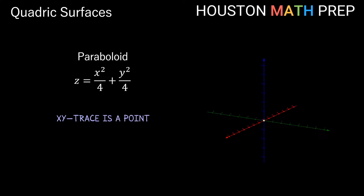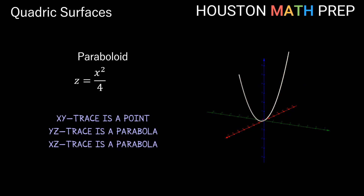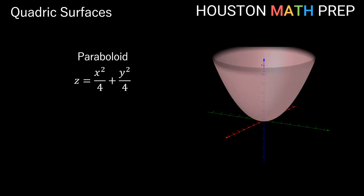Setting z = 0 for the xy trace gives two quadratic terms adding to zero, which can only happen when x and y are both zero — so the trace is just the origin, similar to the cone. Setting x = 0 for the yz trace gives a parabola in the yz plane, and setting y = 0 for the xz trace gives another parabola. Looking at all traces together, we can see the structure of this parabola-based surface — a circular paraboloid opening upward from the origin in 3D space.